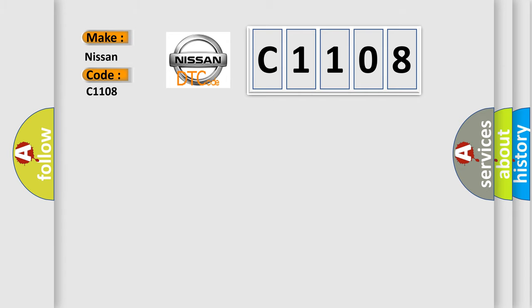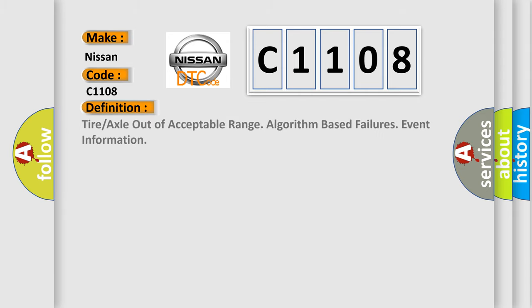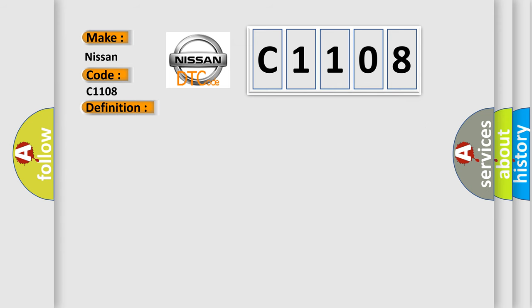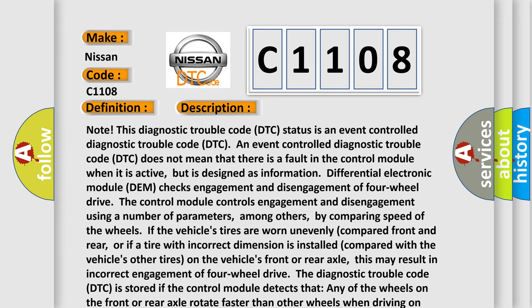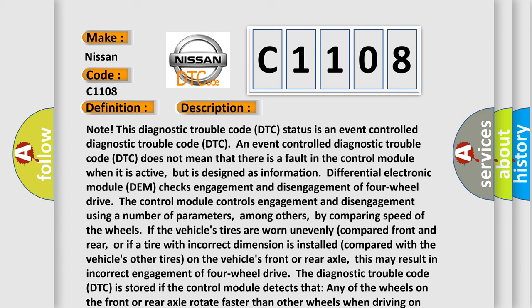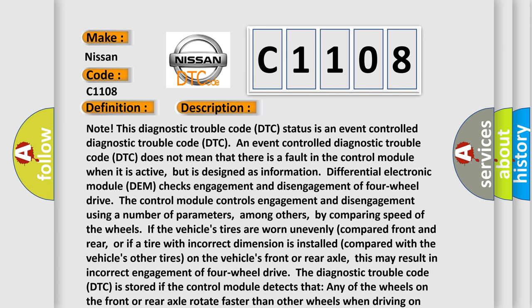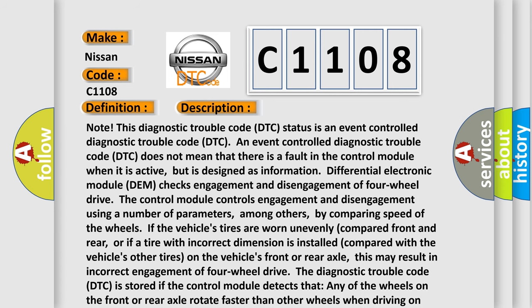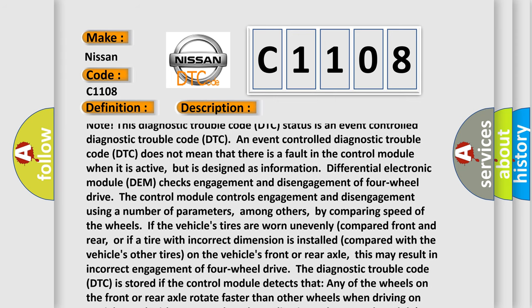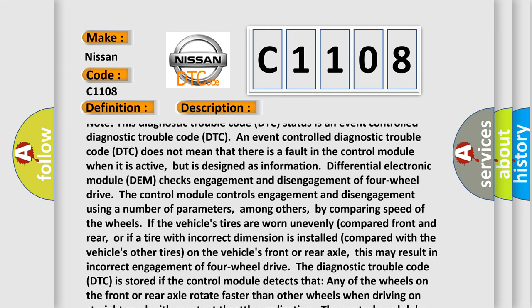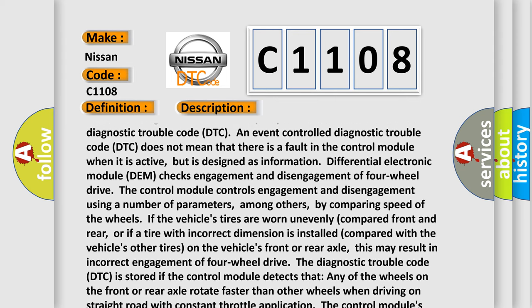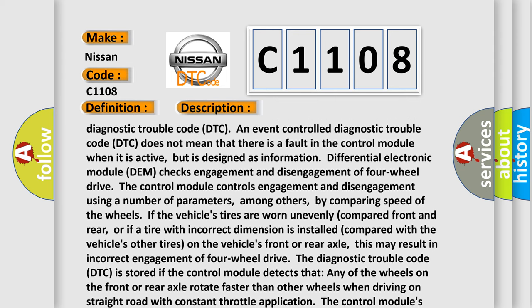The basic definition is: Tire or axle out of acceptable range — algorithm based failures event information. This diagnostic trouble code DTC status is an event-controlled diagnostic trouble code. An event-controlled DTC does not mean there is a fault in the control module when it is active, but is designed as information. The differential electronic module DEM checks engagement and disengagement of four-wheel drive.